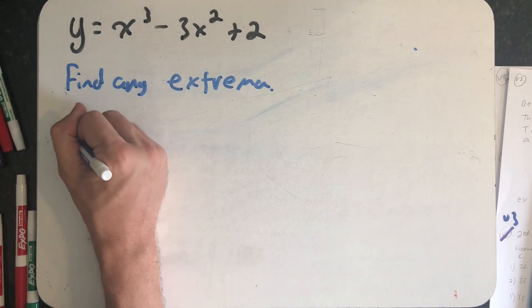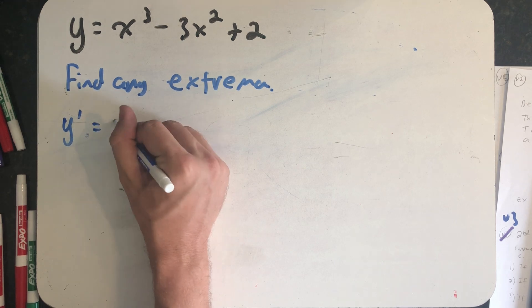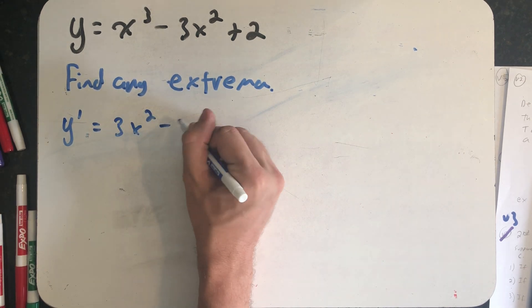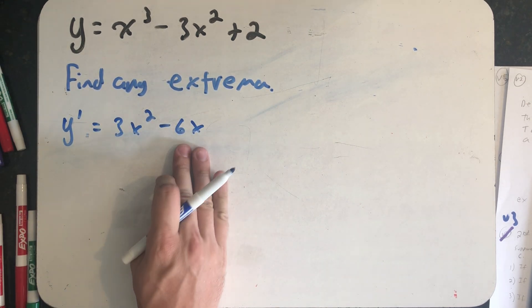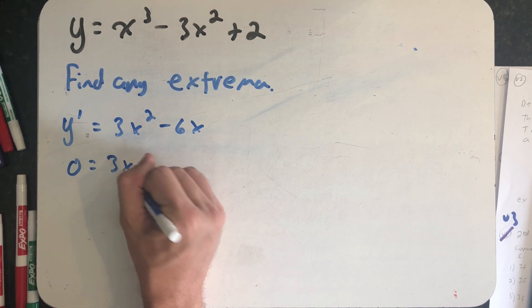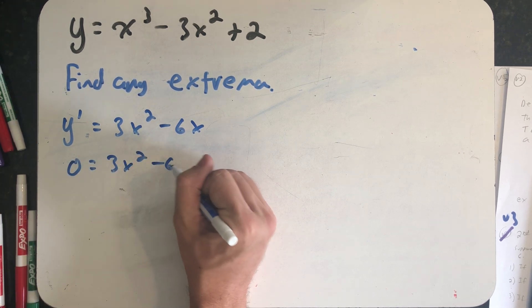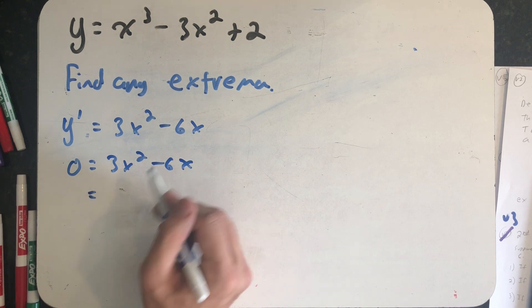So my first step, I'll take a first derivative and use that to find any critical points. 3x² - 6x, set that equal to 0. Because I have a polynomial, there are not going to be any places where my derivative doesn't exist.